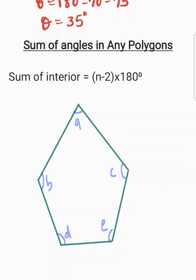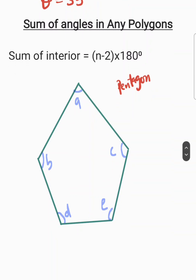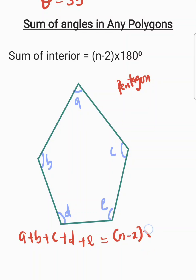Now let's look at this shape. It has 1, 2, 3, 4, 5 sides — so this is called a pentagon. The rule states n minus 2 multiplied by 180 degrees. For the pentagon, we have angle A plus angle B plus angle C plus angle D plus angle E, and their sum must equal n minus 2 multiplied by 180 degrees.